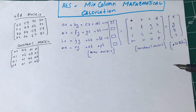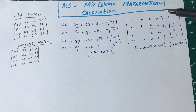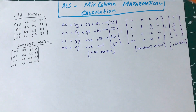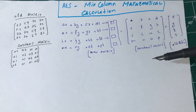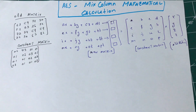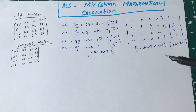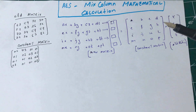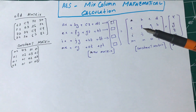In AES encryption, the first thing done is SubBytes, after which the state matrix goes through ShiftRows. After ShiftRows transforms the state matrix, the last mathematical process applied to your data is MixColumns. Let's look at the mathematical definition of MixColumns.